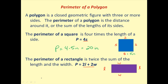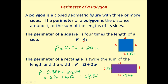Now if we know that the length is equal to 4 feet and the width is equal to 8 feet, we can use the perimeter formula. It would be 2 times 4 feet plus 2 times 8 feet, which equals 8 feet plus 16 feet, giving us a perimeter of 24 feet — the sum of all four sides.